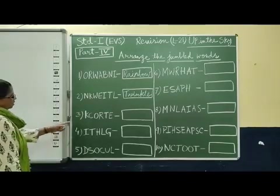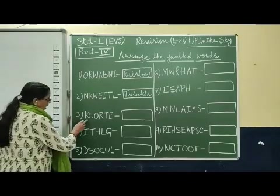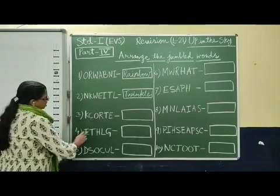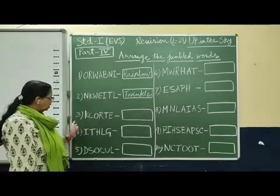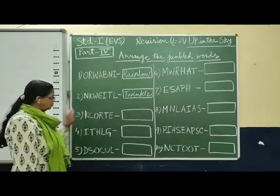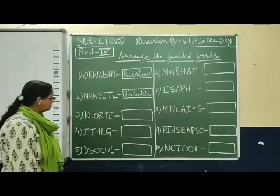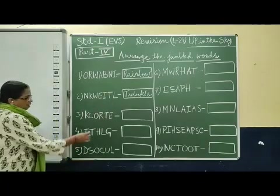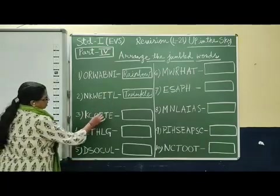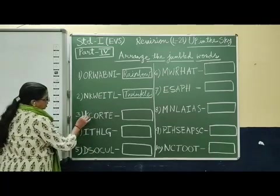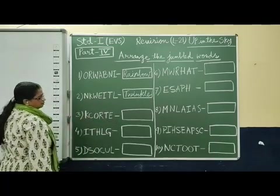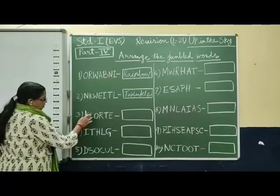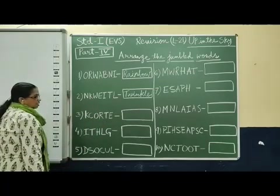Next one: K, C, O, R, T, E. Can you understand which spelling you have learned in this chapter? I will help you now. R, O, C, K, E, T — Rocket. R, O, C, K, E, T — Rocket.